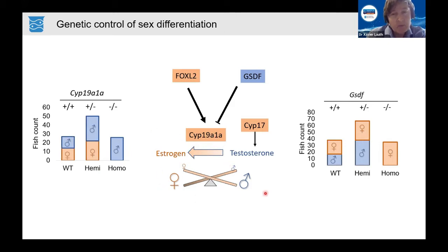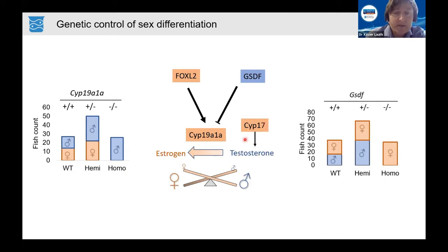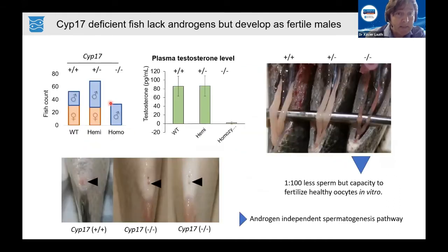We then asked what happens if we lose both testosterone and oestrogen. For this, we inactivated CYP17, the enzyme controlling the production of testosterone and indirectly oestrogen. Without oestrogen, we expected males — and that is what we observed. Fish completely inactivated for CYP17 had genetic females sex-reversed into males, giving us an all-male population.